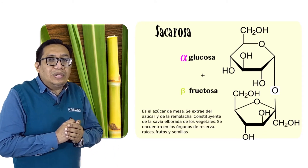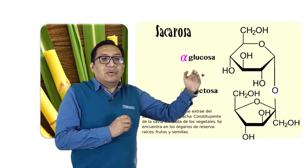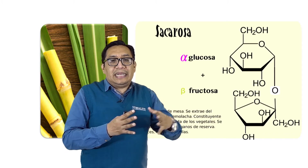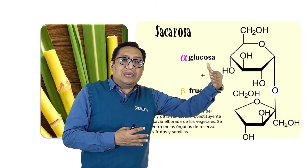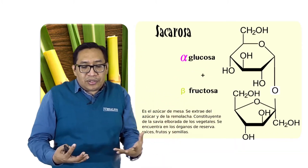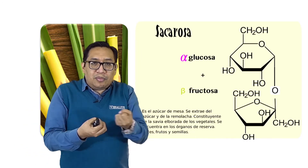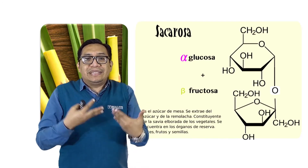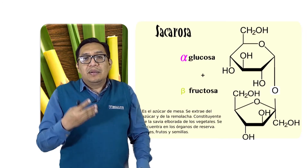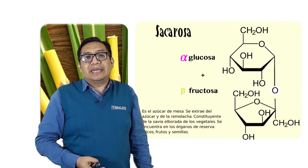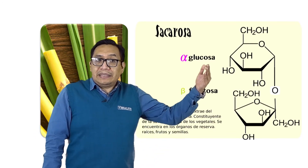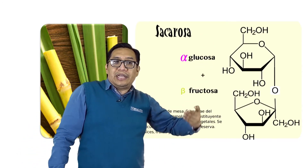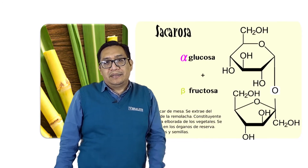Ahora, un detalle importante. Si yo tengo glucosa más fructosa unidas por enlace, es la sacarosa. Pero si yo rompo este enlace y en una solución tengo los dos monómeros juntos pero sin formar enlace, eso se llama azúcar invertido. El azúcar invertido, que es más dulce que la sacarosa, no es otra cosa que una solución de estos dos monómeros pero sin enlace.